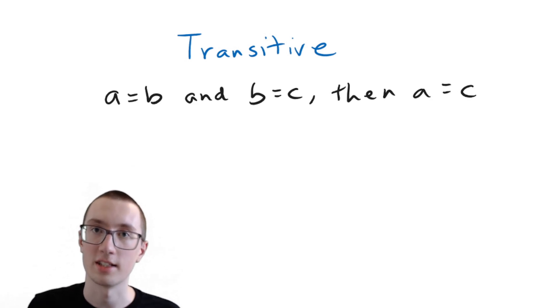then A equals C. So if the first thing and the second thing are equal, and the second thing and the third thing are equal, then the first and the third thing must be the same, right?